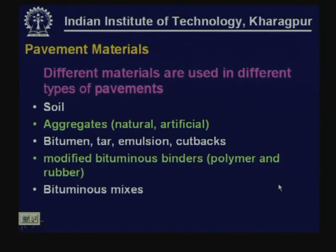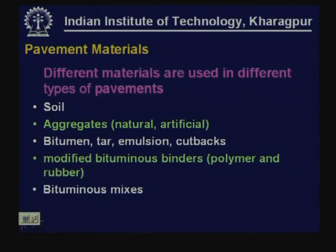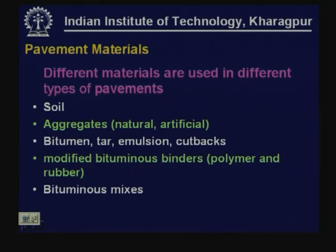We use different types of pavement materials for different types of pavements. For bituminous pavements we use bituminous materials; for concrete pavements we use concrete slabs. Materials commonly encountered in pavement construction include soil for embankment and subgrade, aggregates for subbase, bases, bituminous construction, and concrete pavements. These aggregates can be natural or artificial. We also have bituminous binding materials — bitumen, tar, emulsion, or cutback — and among bitumens we also have modified binders such as polymer modified and rubber modified.